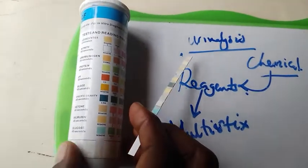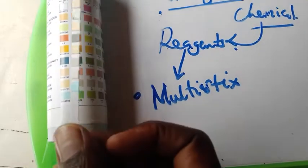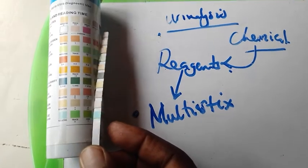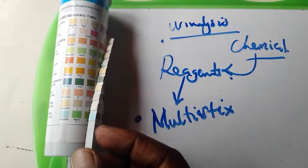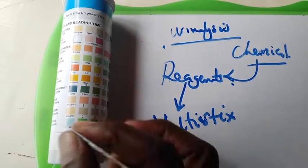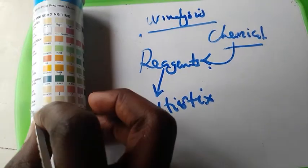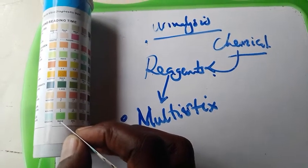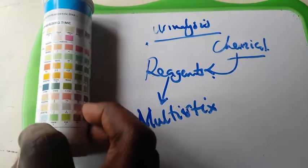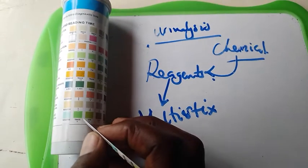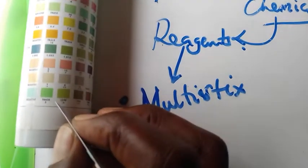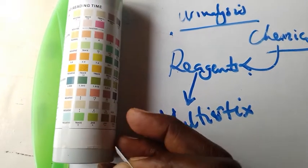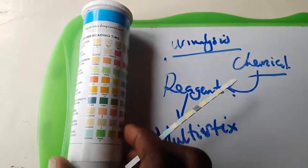You have to follow, for example, if you say bilirubin, which is the next one there, you have to follow until you go to where it has changed to. That will be a result. The result is under here. If the color changes, for example, for glucose, if it changes to say trace there, the reading you're supposed to record is this trace plus or minus. If it changes to 250 here, the answer you're supposed to record is supposed to be plus here. That's the one that we're going to record on the readings.